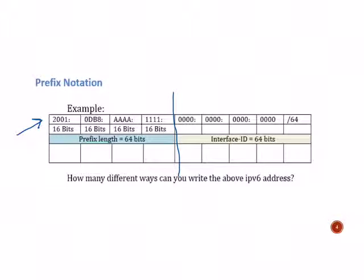Using the rules we learned earlier, we can also reduce this address to 2001 colon DB8 colon AAAA colon four ones colon and then a second colon.